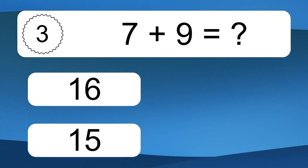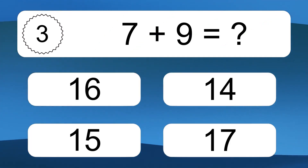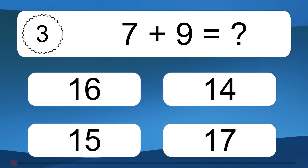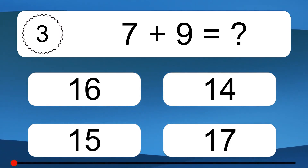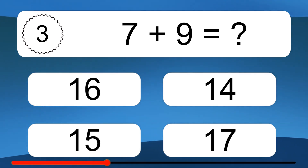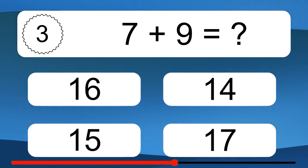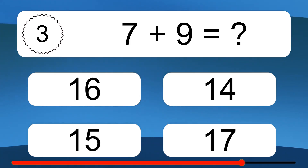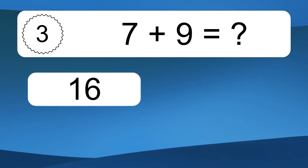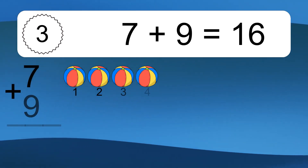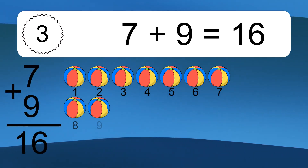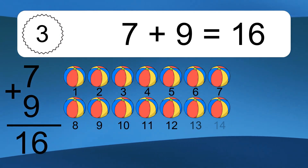7 plus 9 equals what? 7 plus 9 equals 16.